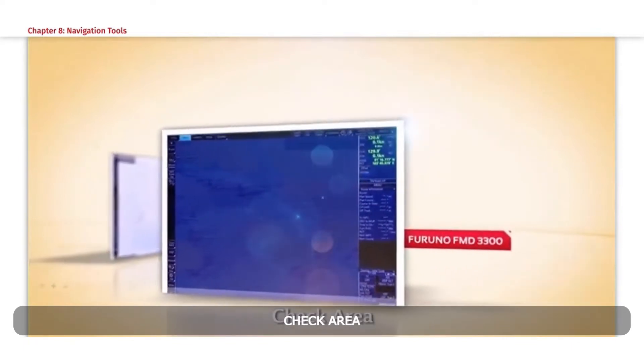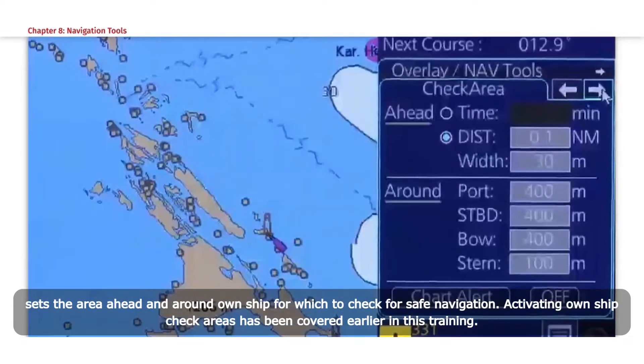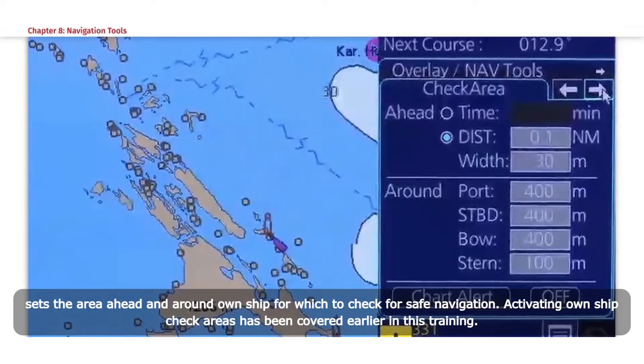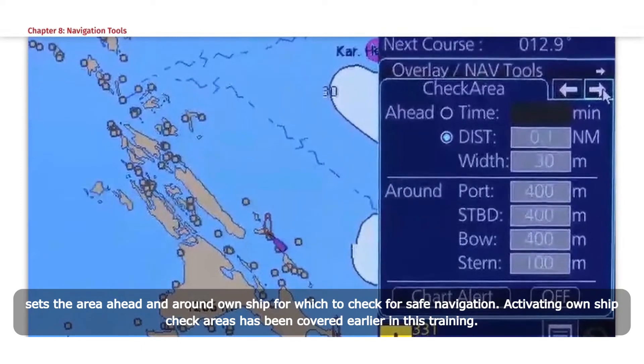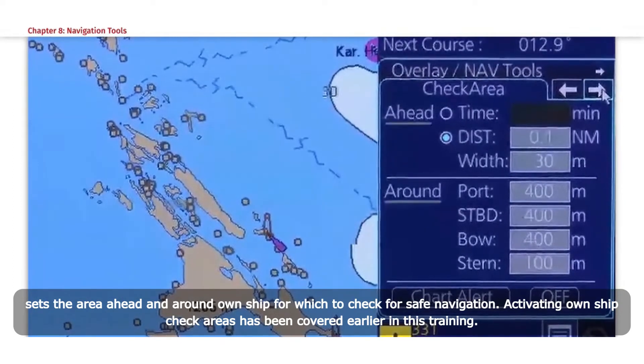Check Area sets the area ahead and around Own Ship for which to check for safe navigation. Activating Own Ship Check Areas has been covered earlier in this training.